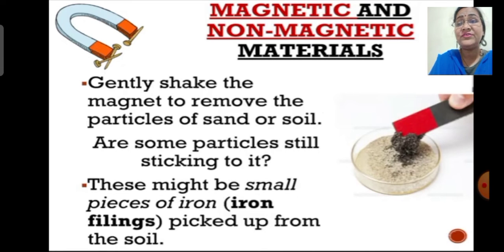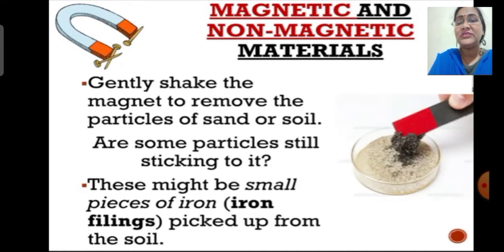What are these particles, children? These are the small pieces of iron, commonly known as iron fillings, which are already present in the soil. These iron fillings are mixed in the soil mixture and then get attracted to the magnet when the magnet is picked up from the soil. So we can conclude that soil is generally a non-magnetic material, but some iron fillings are present in the soil which can stick to the magnet.